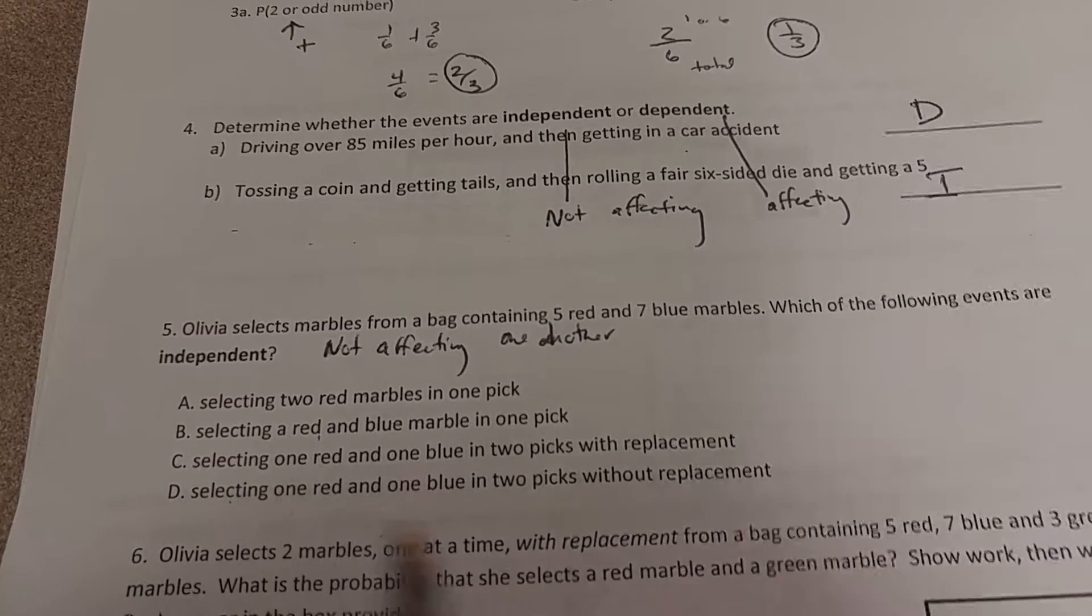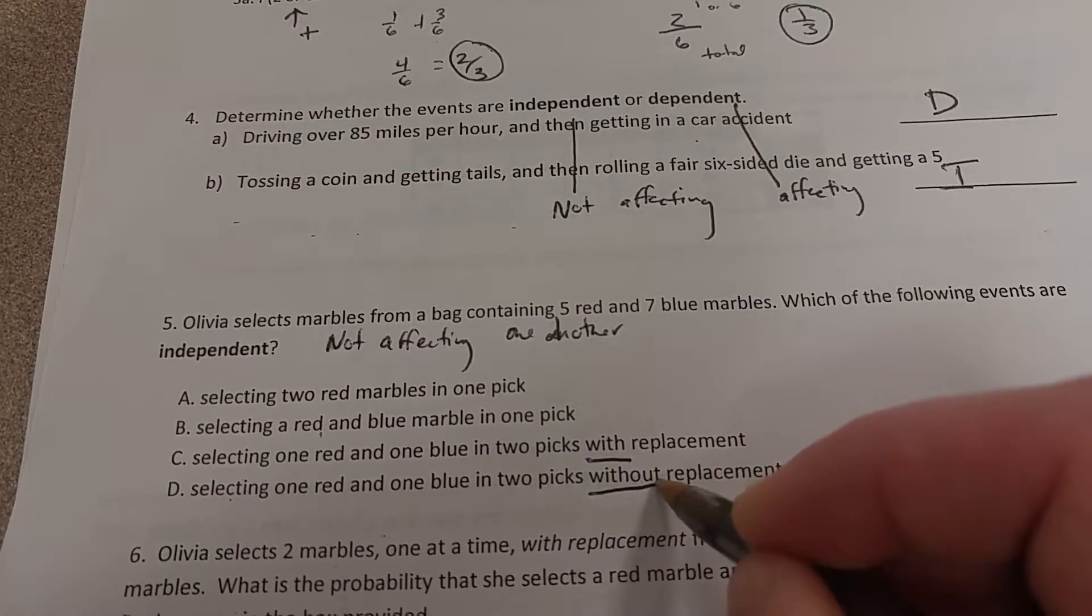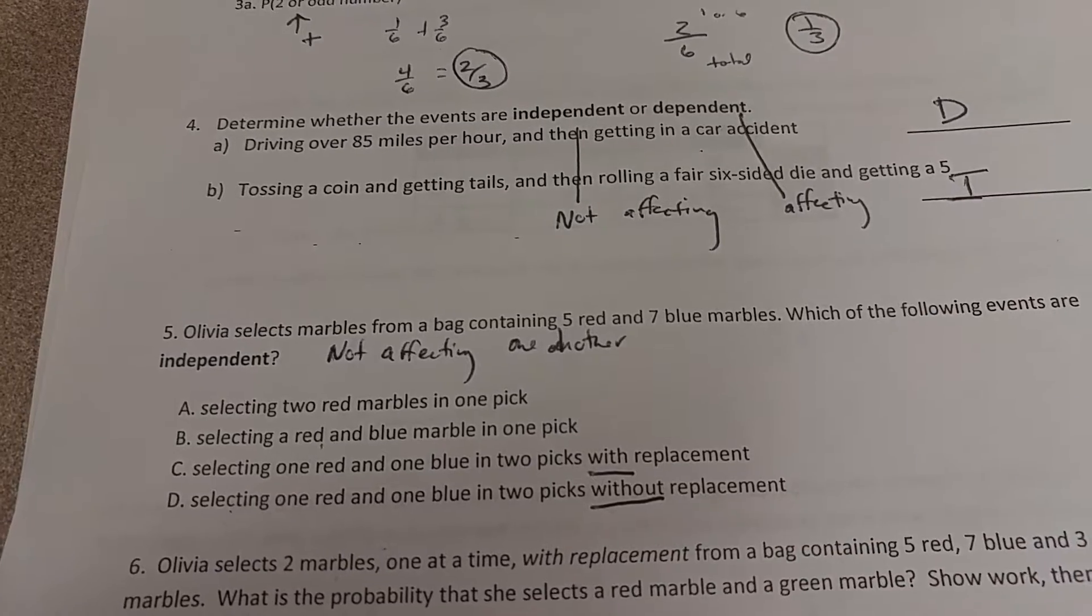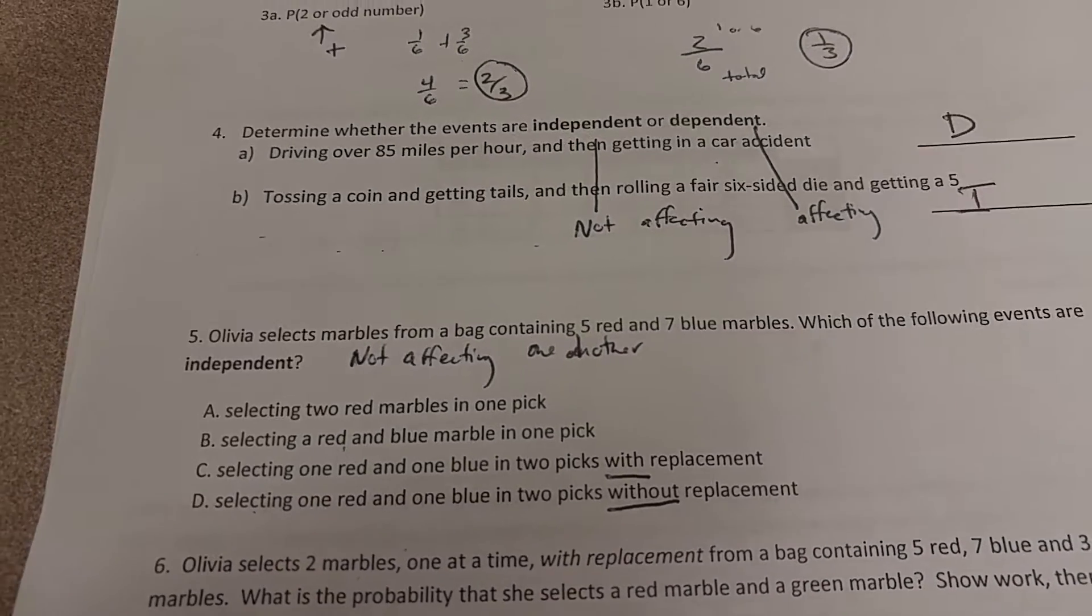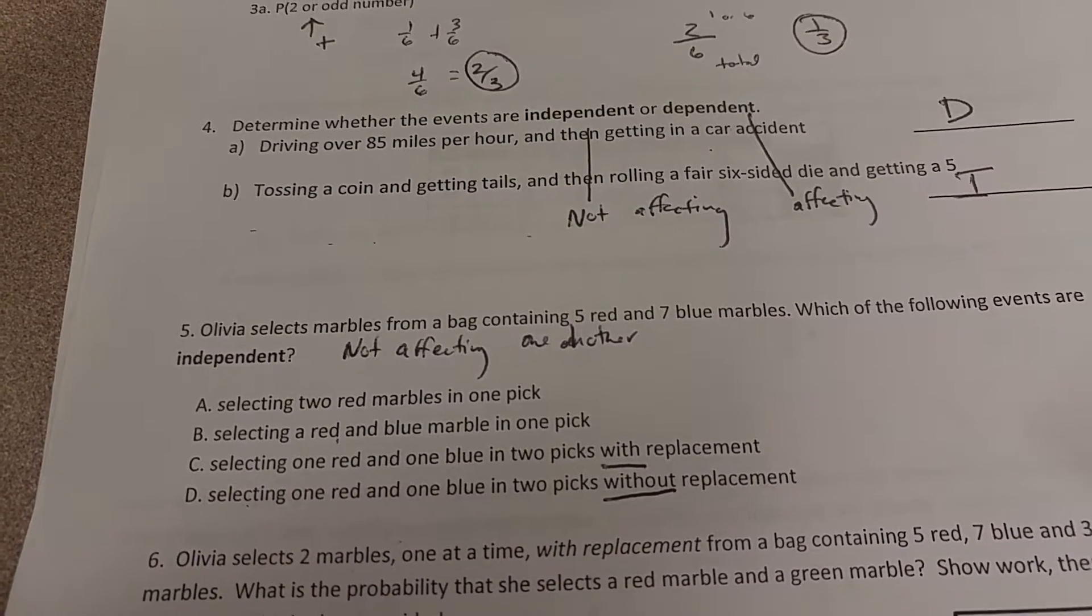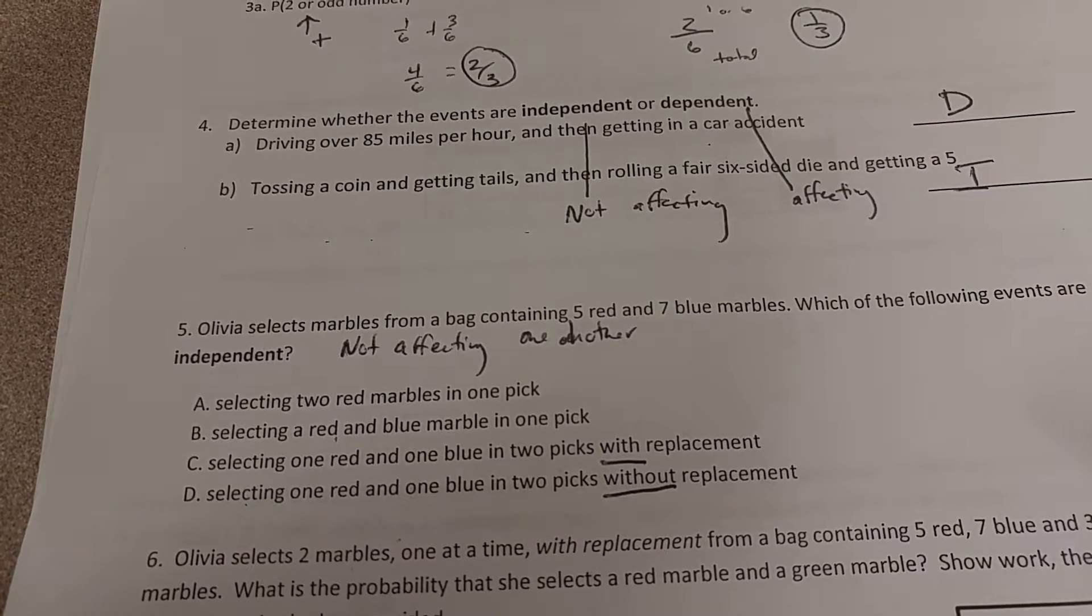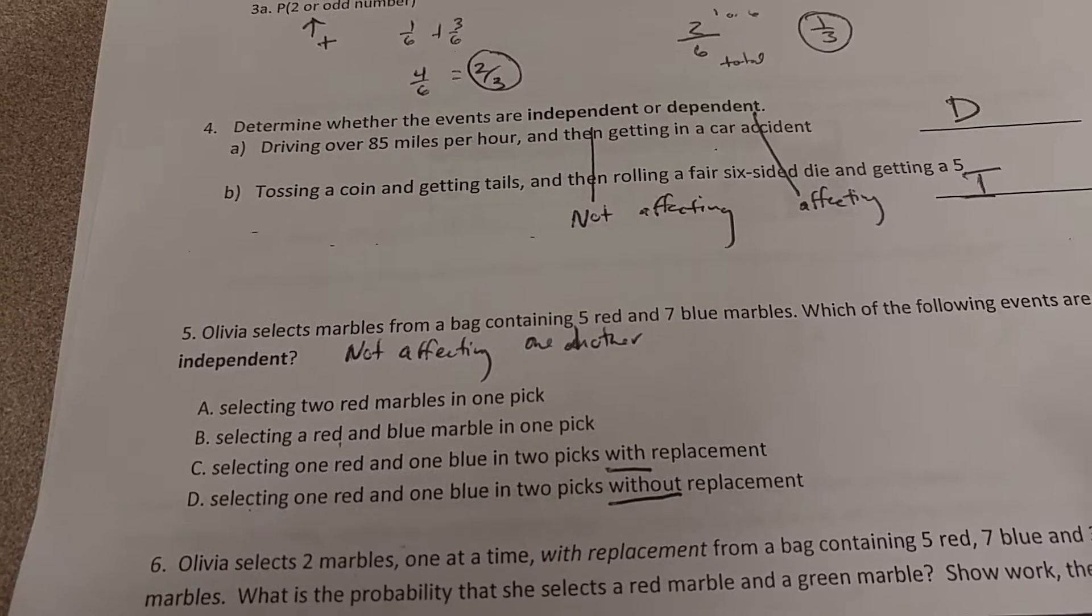So then we look at C and D. One of them is with replacement, and one of them is without. If you pick a marble and you don't put it back in, that is changing the likelihood that you can get another blue one, or a blue one, in the second pick.